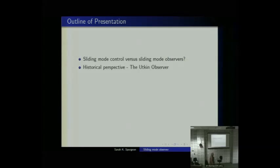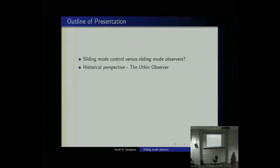I'm going to take a historical perspective and motivate sliding mode observers by looking at the very first one that appeared in the literature, which I've called the Utkin Observer, largely because it appeared in Professor Utkin's book. We will look at some of the positives and negatives of that by a tutorial example.